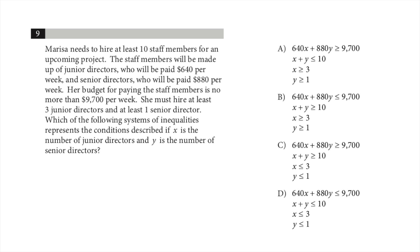Marissa needs to hire at least 10 staff members for an upcoming project. The staff members will be made up of junior directors, who will be paid $640 per week, and senior directors, who will be paid more — $880 per week. Her budget for paying the staff members is no more than $9,700 per week. I'm just going to say her budget is $9,700, so she needs to spend that amount or less.